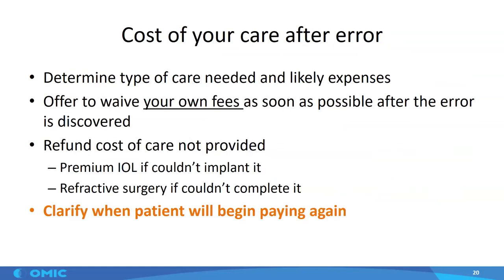What should you do for the cost of care after a clear-cut error? First, determine the type of care needed and the likely expenses. Ophthalmologists may offer to waive their own fees as soon as possible — don't wait for the patient or family to ask. If you couldn't provide the intended care, offer right away to refund the cost — for example, if you couldn't implant a premium IOL and had to put in a monofocal, or if there was a complication early in a refractive surgery procedure and you couldn't complete it. Always clarify when the patient will begin paying again: 'We're so sorry this happened. We're taking action to make sure it doesn't happen to anyone else. We will provide the care at no cost to you. However, once we both agree your eye is healed, you will start paying for your care again.'